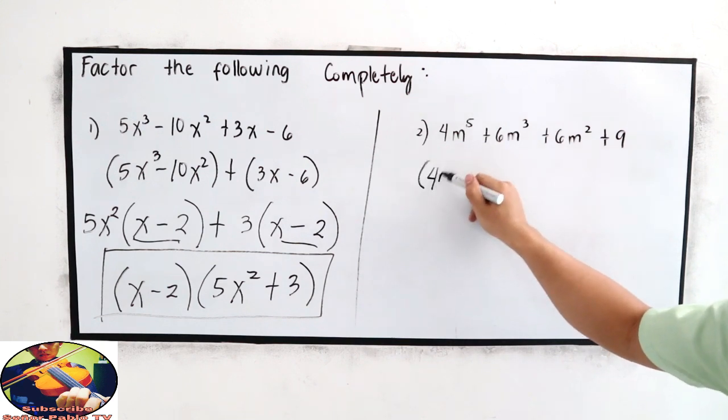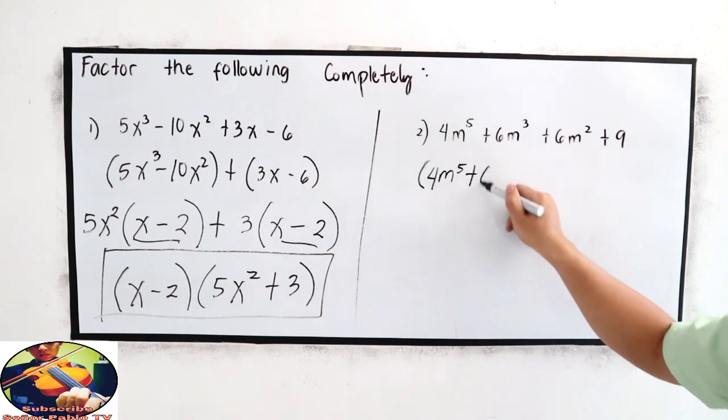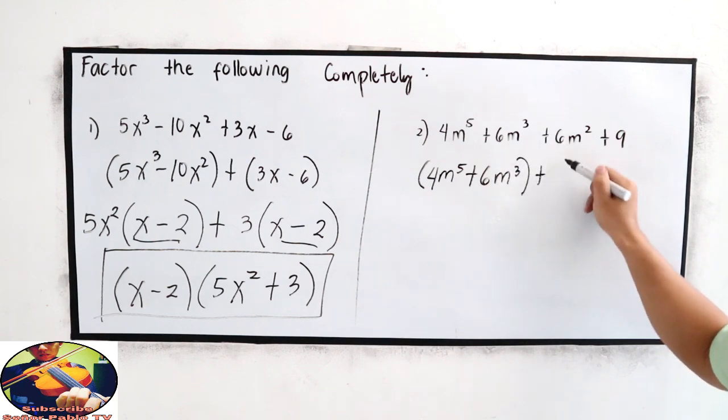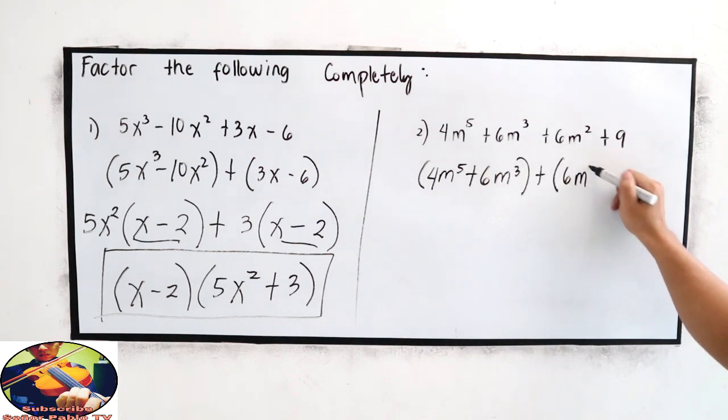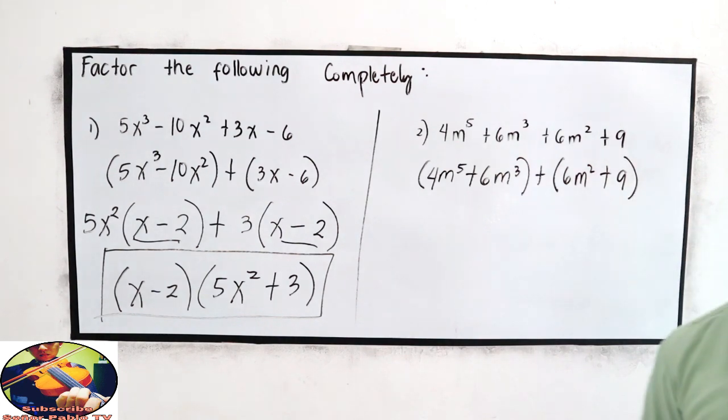So we have 4m raised to 5 plus 6m cubed plus 6m squared plus 9. Now, get the common factor.